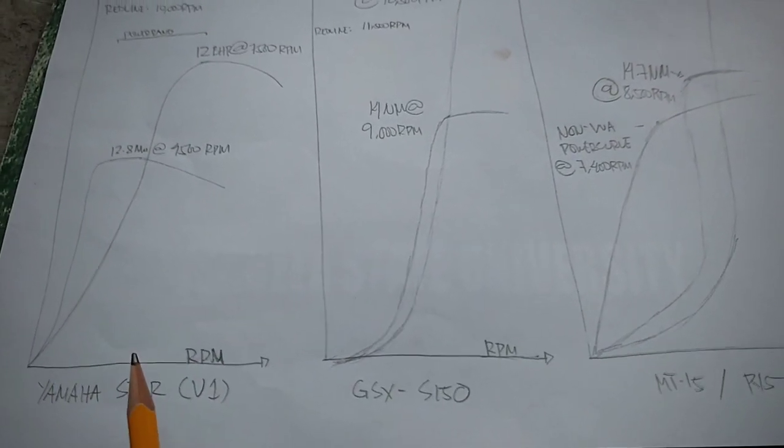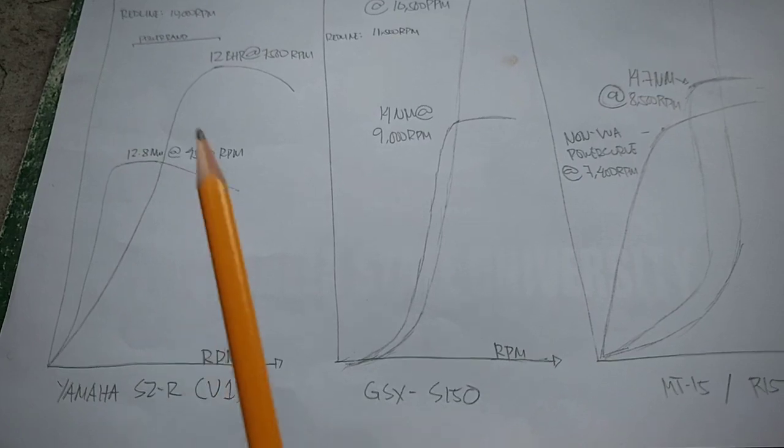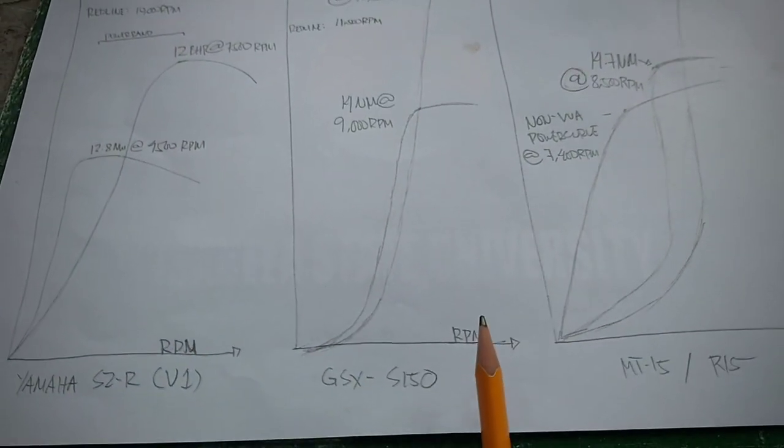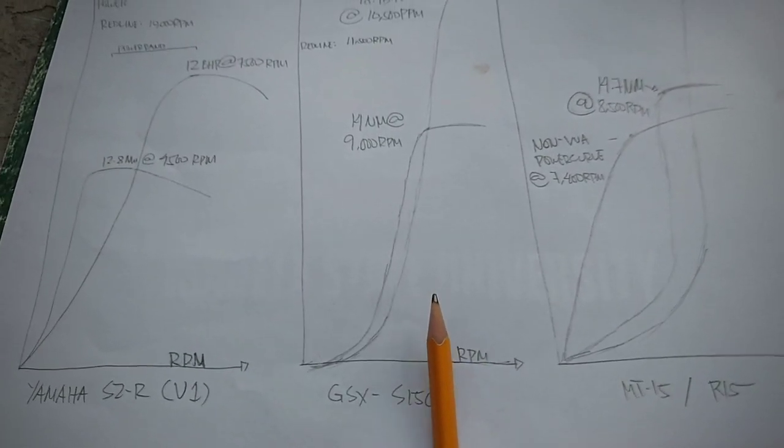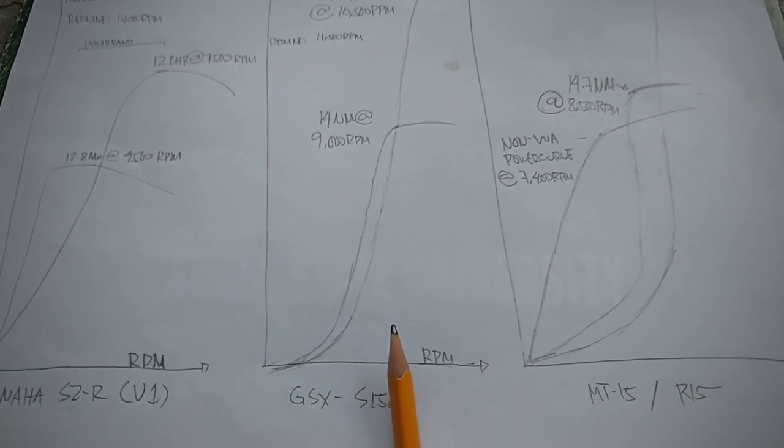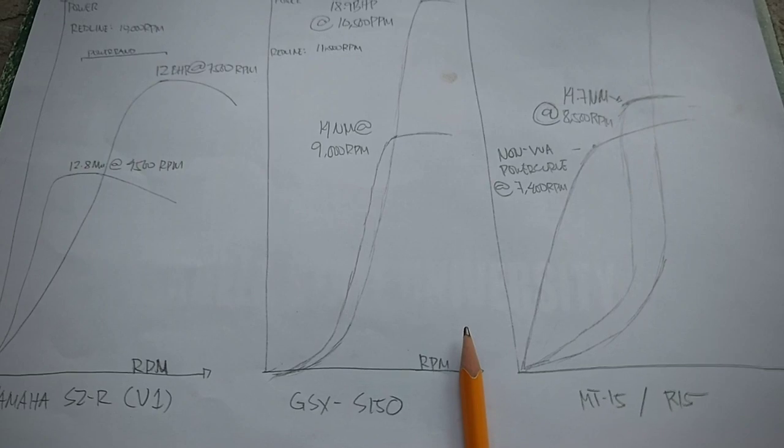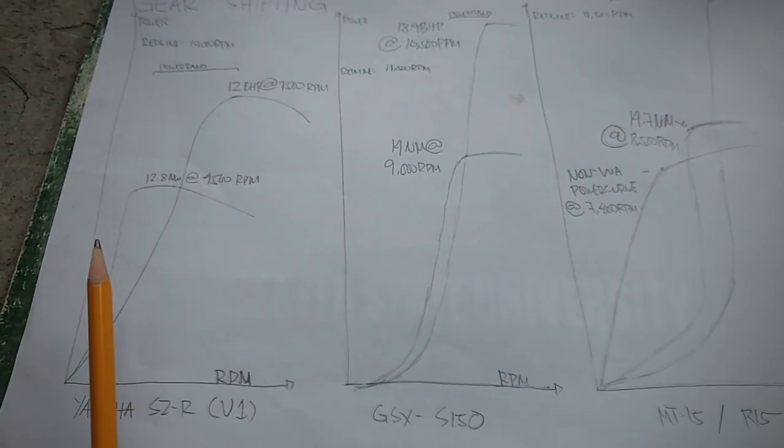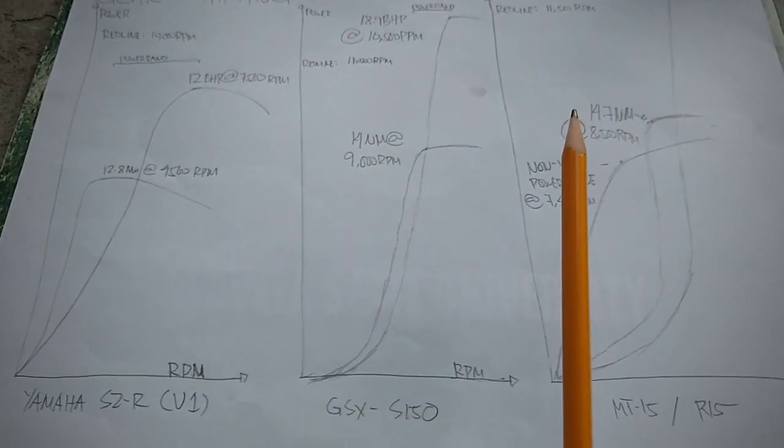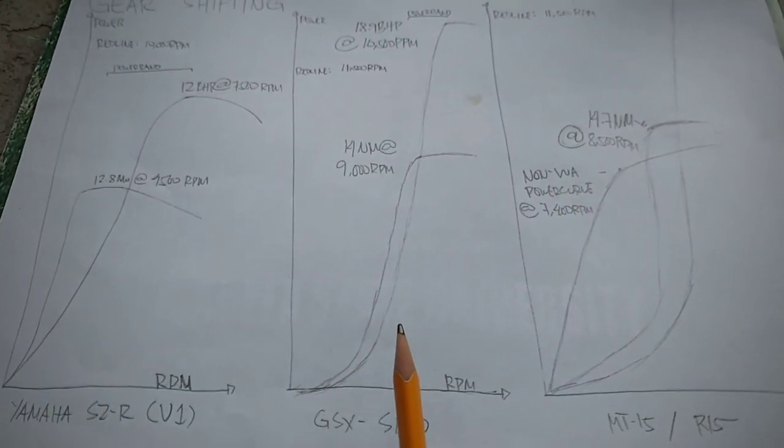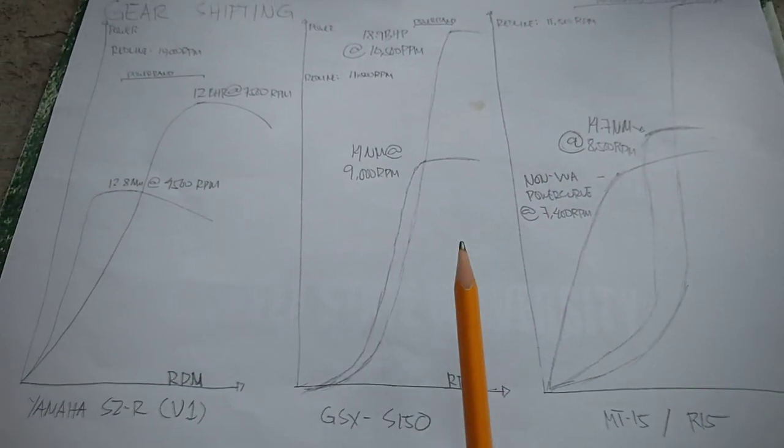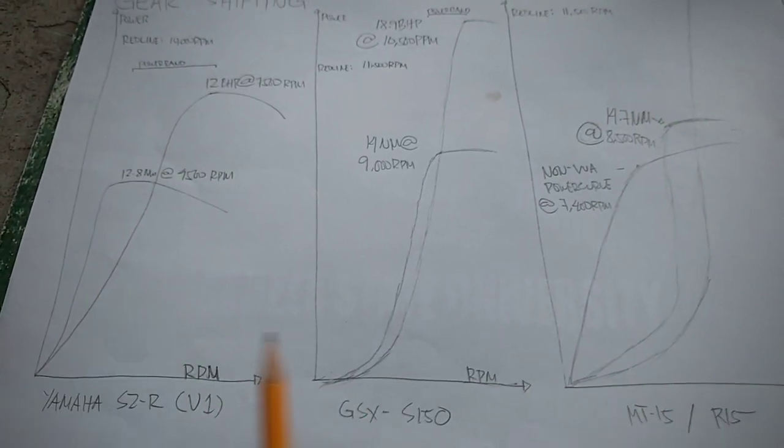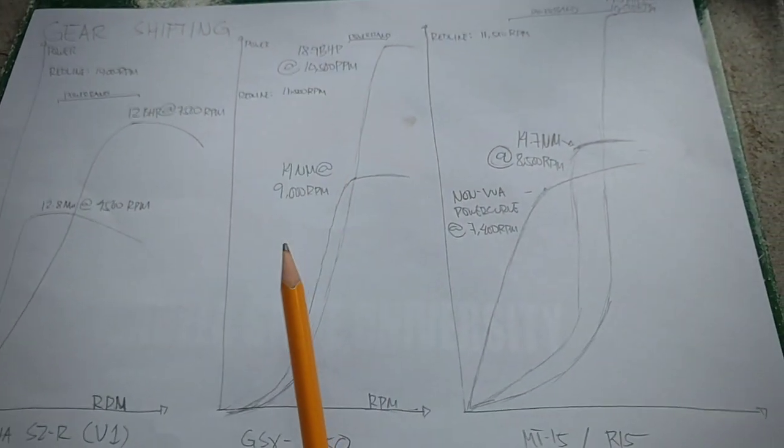So dito natin makikita yung difference ng behavior nila. So low revving bikes, malakas sa low RPM, manghihina sa high RPM. Si high revving bike, walang pwersa sa low RPM, biglang may hatak sa high RPM. So para ma-eliminate yung absence ng power sa low RPM or high RPM, pinagsama ng Yamaha ang profile na itong dalawa through VVA para meron kang hatak sa low RPM and then meron kang hatak sa high RPM.